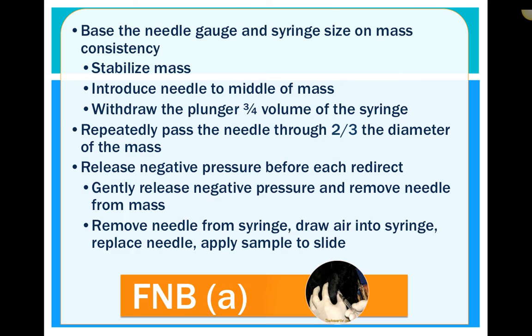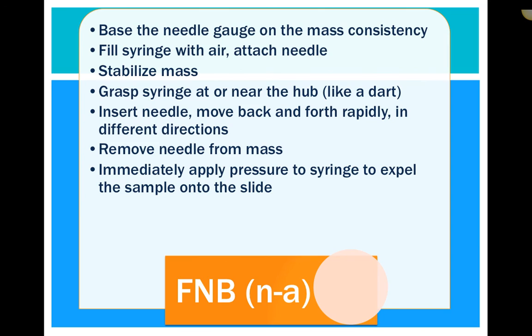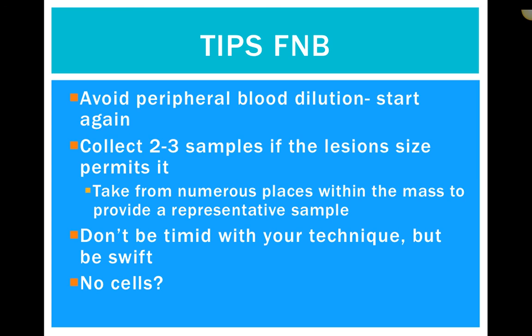Then remove the needle from the syringe, draw air into the syringe, replace the needle, and apply the sample to a slide. For the non-aspirate technique: base needle gauge on mass consistency, fill the syringe with air, attach the needle, stabilize the mass with your fingers, grasp the syringe at or near the hub like a dart, insert the needle into the mass, and move back and forth repeatedly in different directions — covering two-thirds of the diameter of the mass. Keep the needle in the middle of the mass — don't go too superficial or too deep. Then remove the needle from the mass, hover over your slide, and apply pressure to the syringe to expel the sample onto the slide.